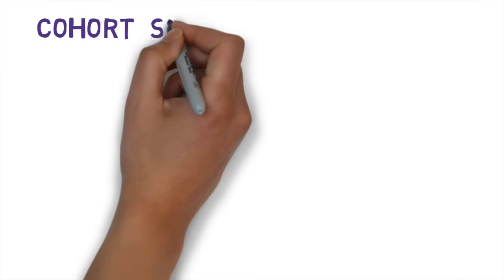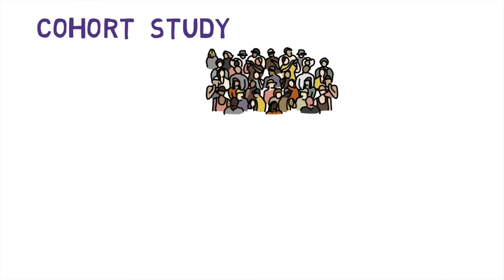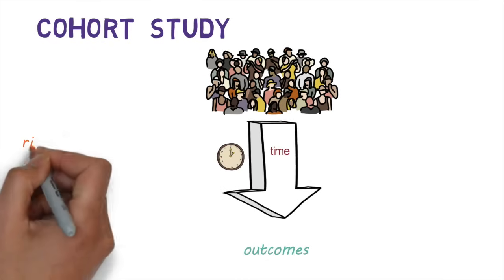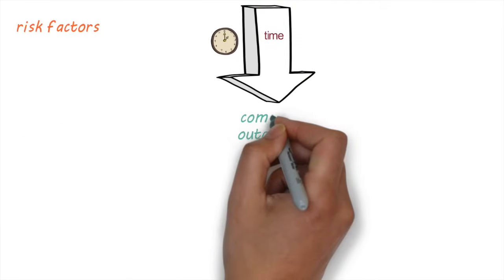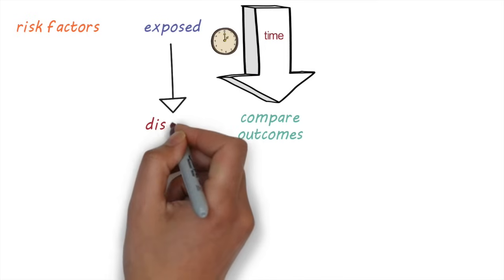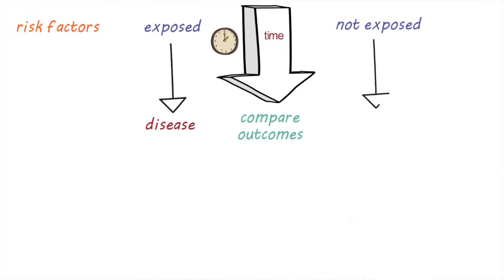Let's have a look at cohort studies now. In a cohort study, a group of people is followed over a period of time to see what happens to them and information about risk factors is collected. We can then compare the occurrence of an outcome, like disease, in those who were exposed to a particular risk factor to those who were not exposed to that risk factor.